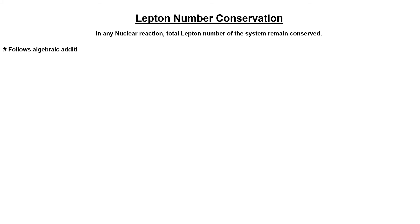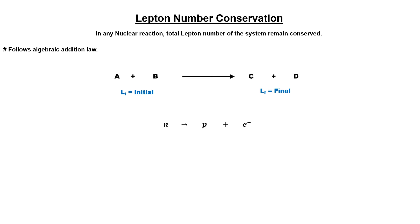Lepton numbers follow the algebraic addition law. So if parent particles A and B interact and decay into two daughter particles C and D, the total lepton number of the parent particles should equal the total lepton number of the daughter particles. For example, consider neutron decaying into proton and electron. Neutron and proton are non-leptonic, so their lepton number is 0, while the electron's lepton number is +1. Since lepton number is not conserved, this reaction is forbidden.